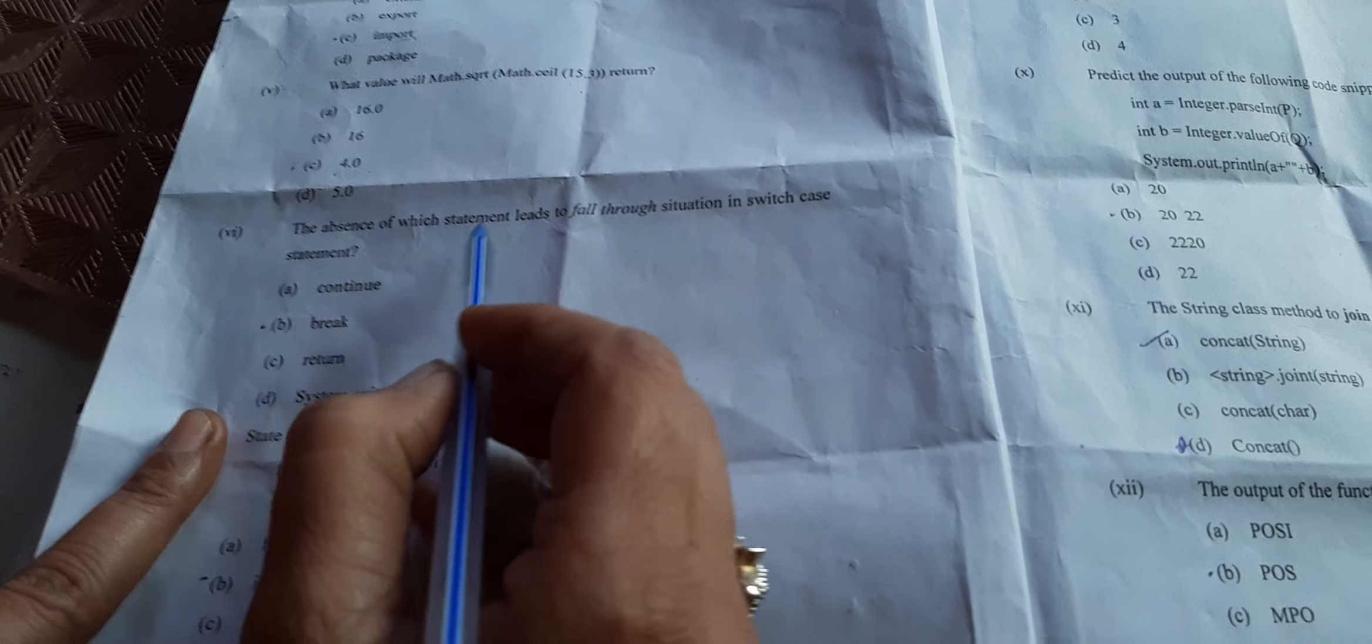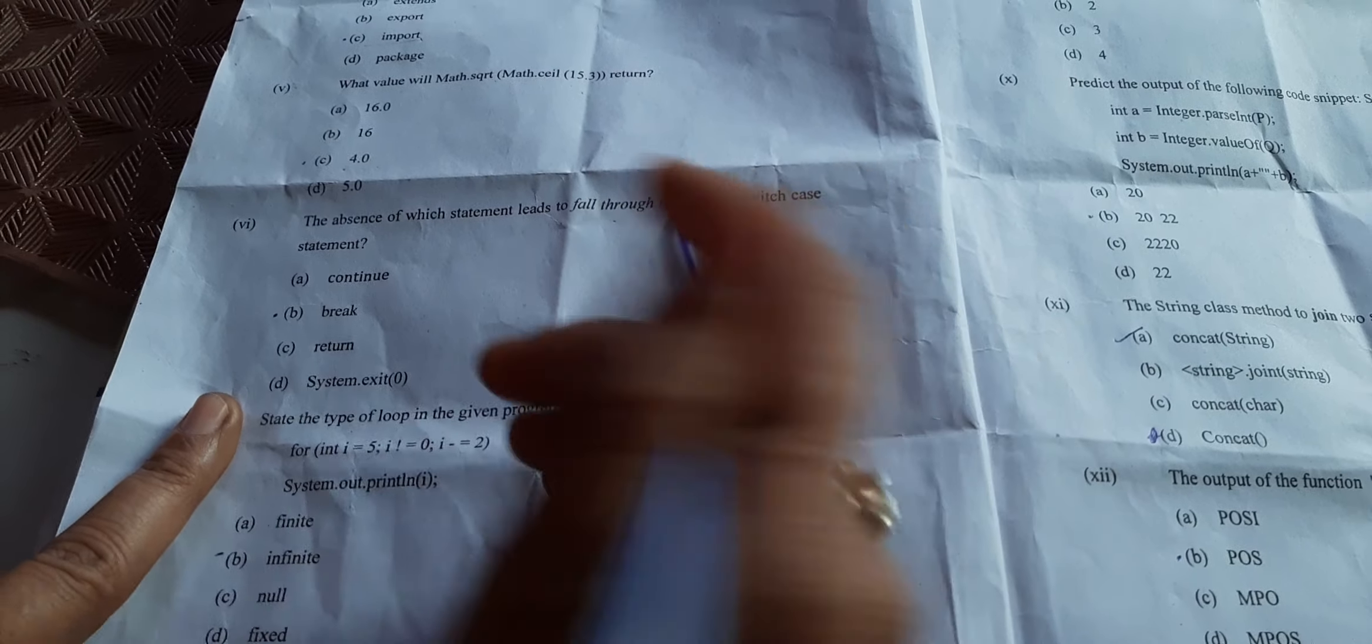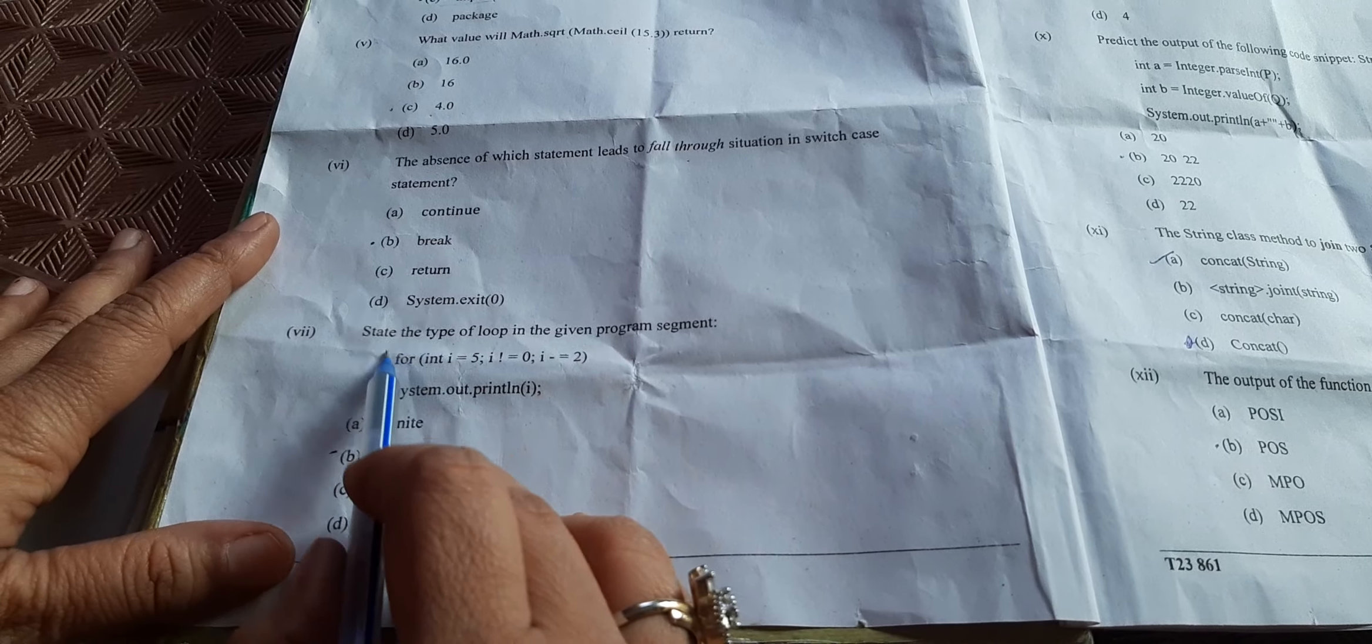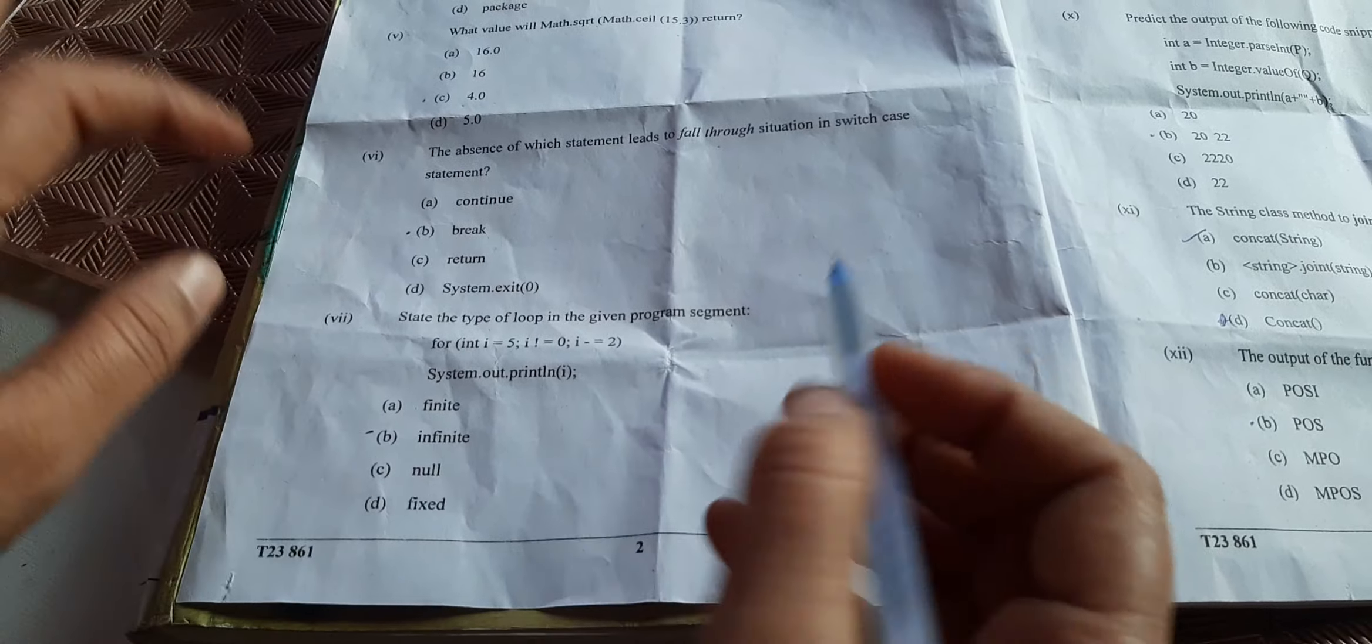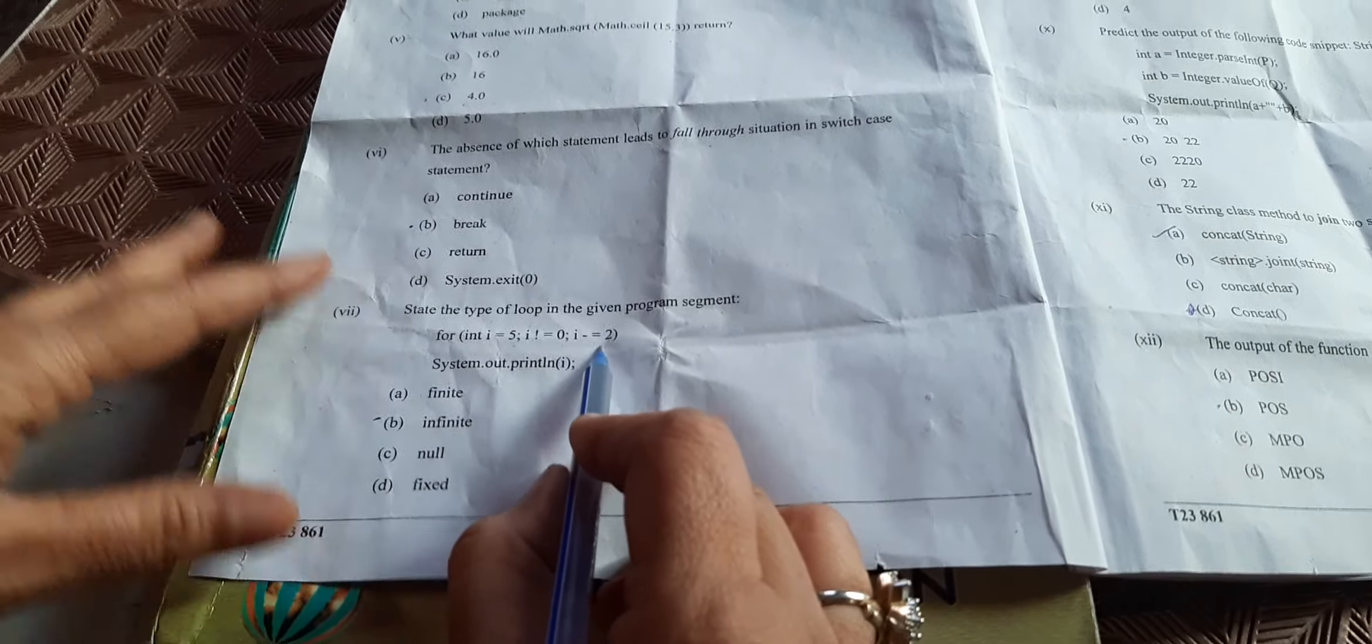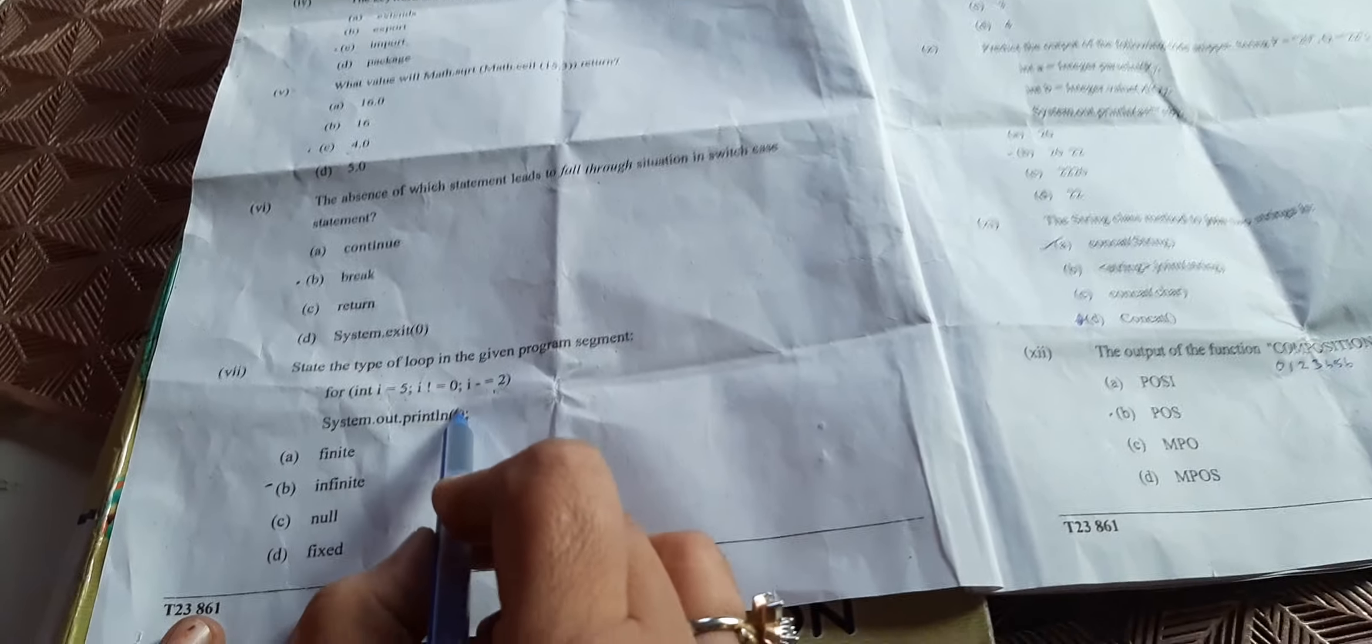Absence of which statement leads to fall through? If you don't put break statement after each case in switch case, it will be a condition of fall through. The type of loop given in the program segment: i value starting from 5, it is not equal to 0 and each time it is decreasing by 2. Its value will go negative and it will go infinite time.